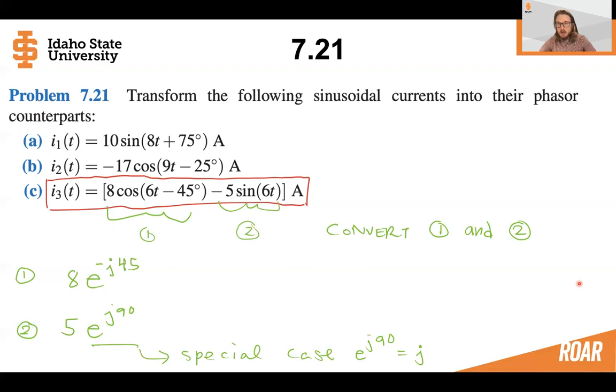And then if you look on a table or look in your book, you can see that this can convert to e to the minus e to the j 90. And this is a special case where e to the j 90 is equal to j. So you can do that math on your own, apply the Euler formula to convince yourself why. But part two of this is equal to j5.